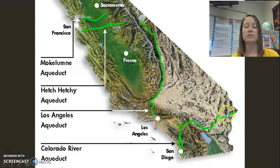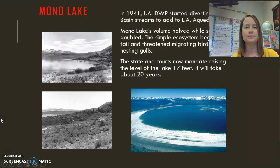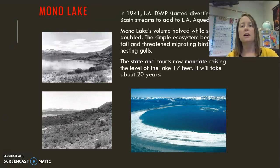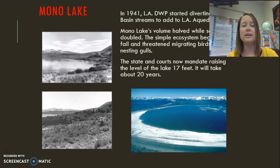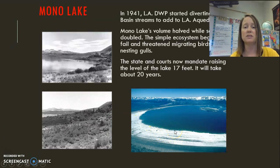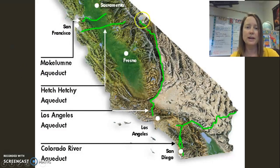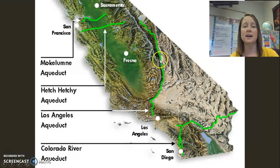There is also the Colorado River Aqueduct that provides water for San Diego. Mono Lake is in northern California — in 1941 water was diverted from the streams that fed this lake to the LA aqueduct, and the lake has shrunk in half, salinity has gone up, and the ecosystem began to fail. The state and courts have mandated raising the lake level 20 feet, but that will take about 20 years. Not only was the lake shrinking, but a lot of water was also lost to evaporation during transfer.